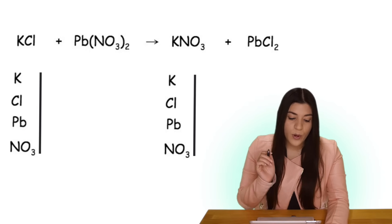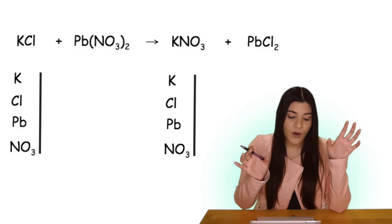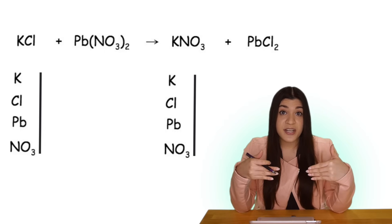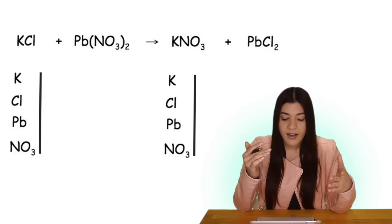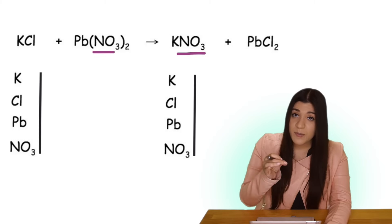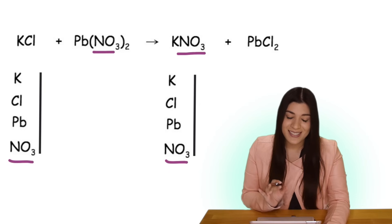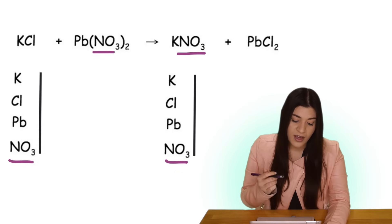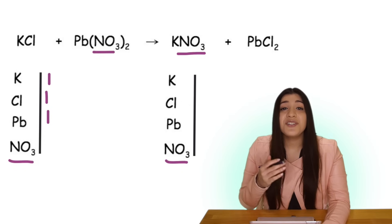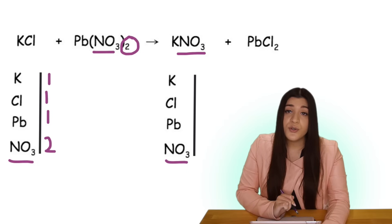Let's balance this equation. When balancing chemical equations I like to put the elements on opposite sides — one list on the reactants and one list on the products. Whenever you have a polyatomic ion like nitrate, I like to keep those intact, but only if they appear the same on either side. So I'm going to leave NO3 together because it makes balancing much easier. For potassium there's one, chlorine there's one, lead there's one, and nitrate there are actually two due to the subscript.